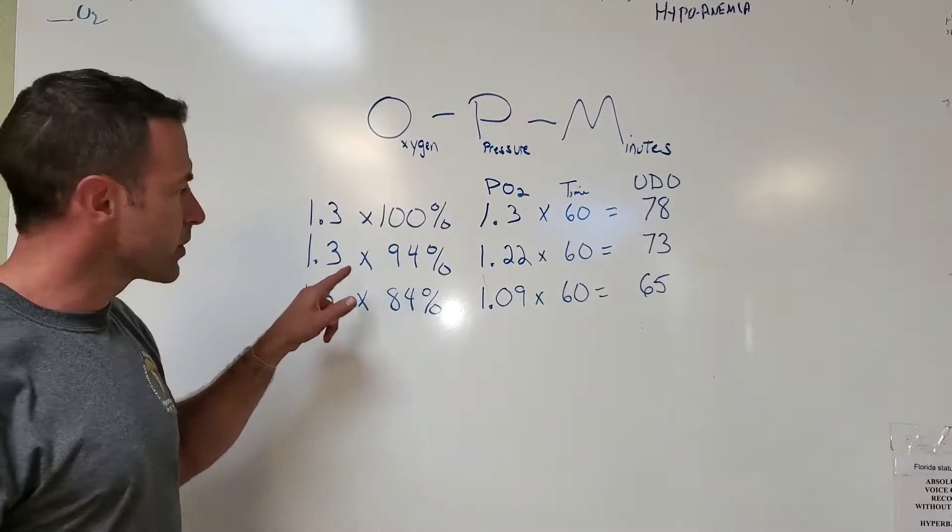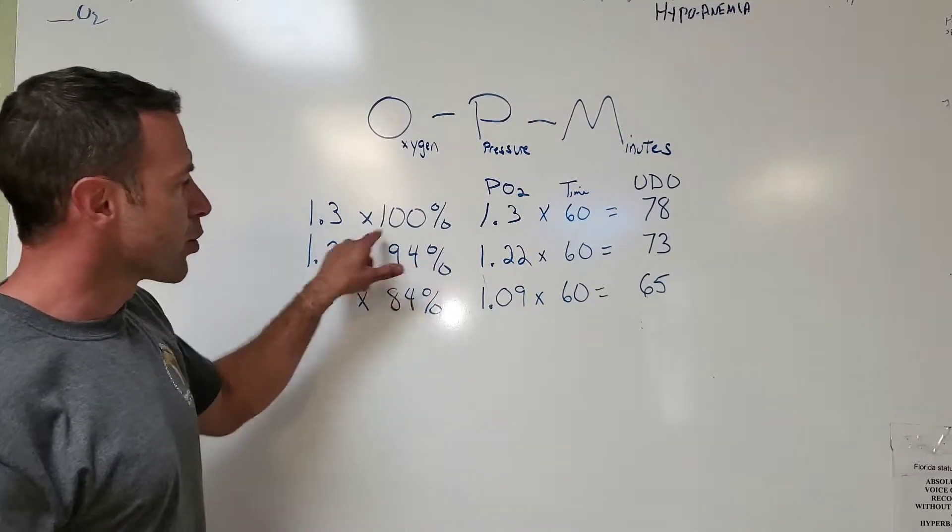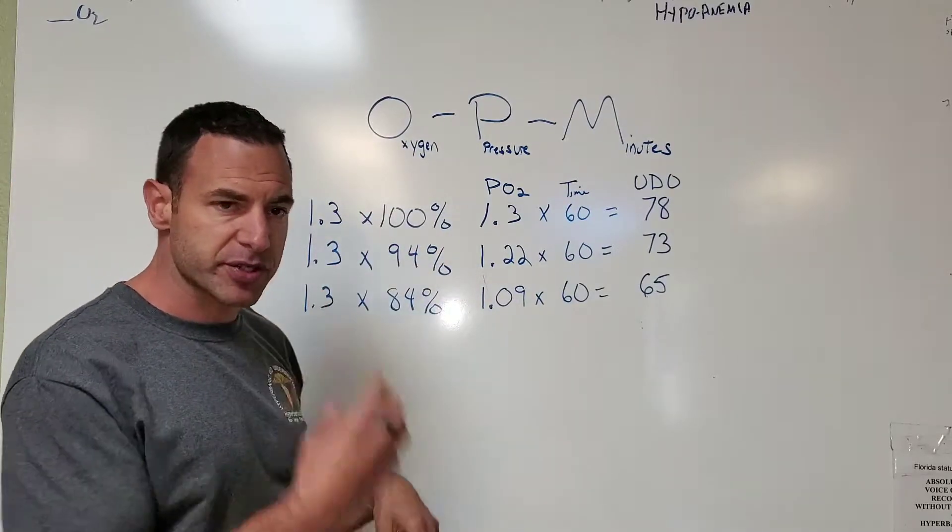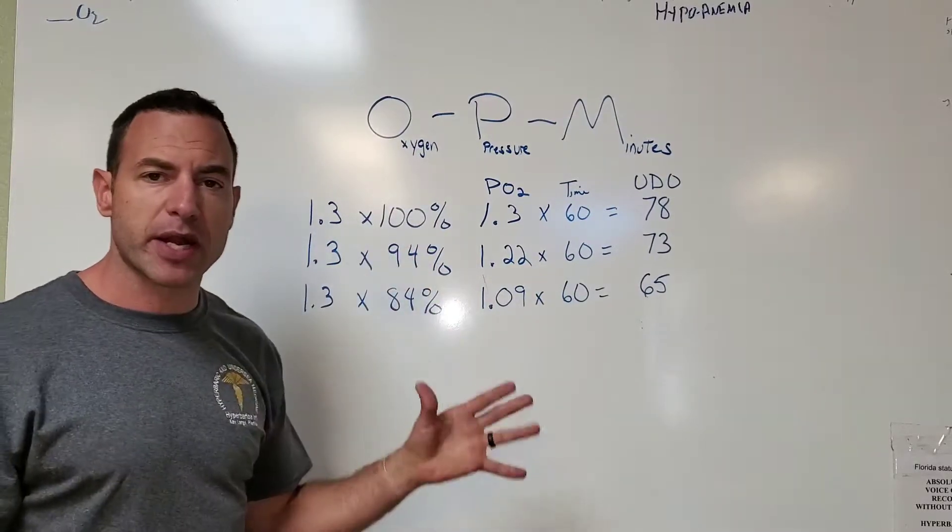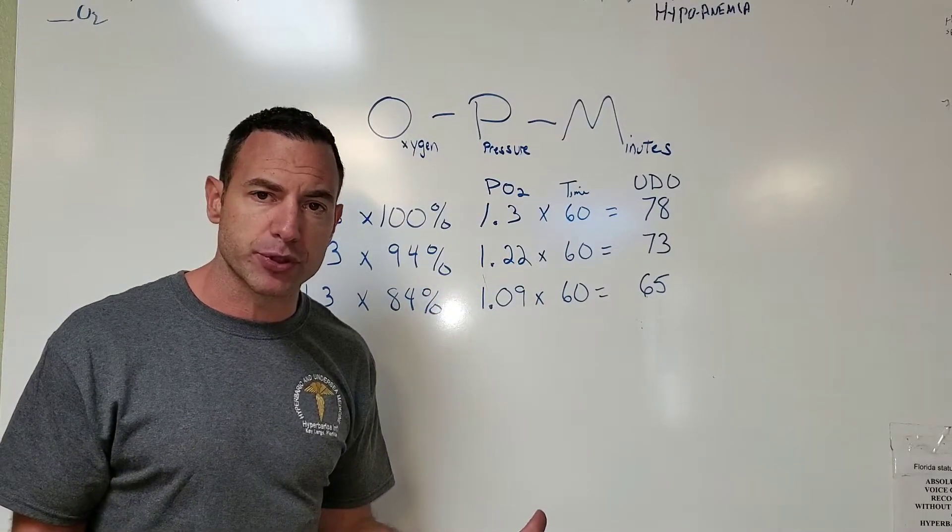1.3 atmospheres at 94%—let's say you're using an oxygen concentrator and you have a really good seal on the mask—we could say that's about 94%. So 1.3 times 94 will give you a PO2 of 1.22.